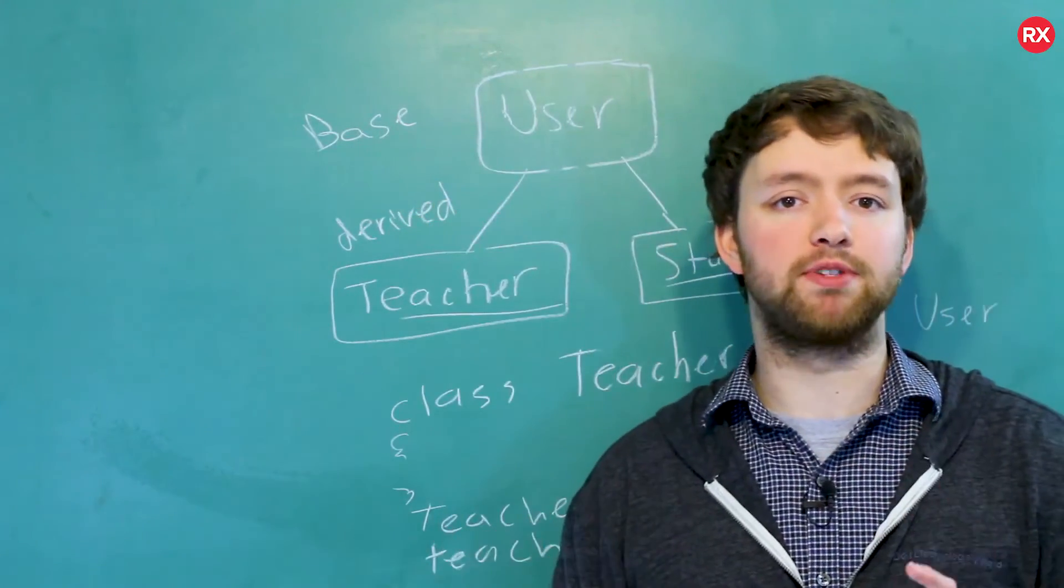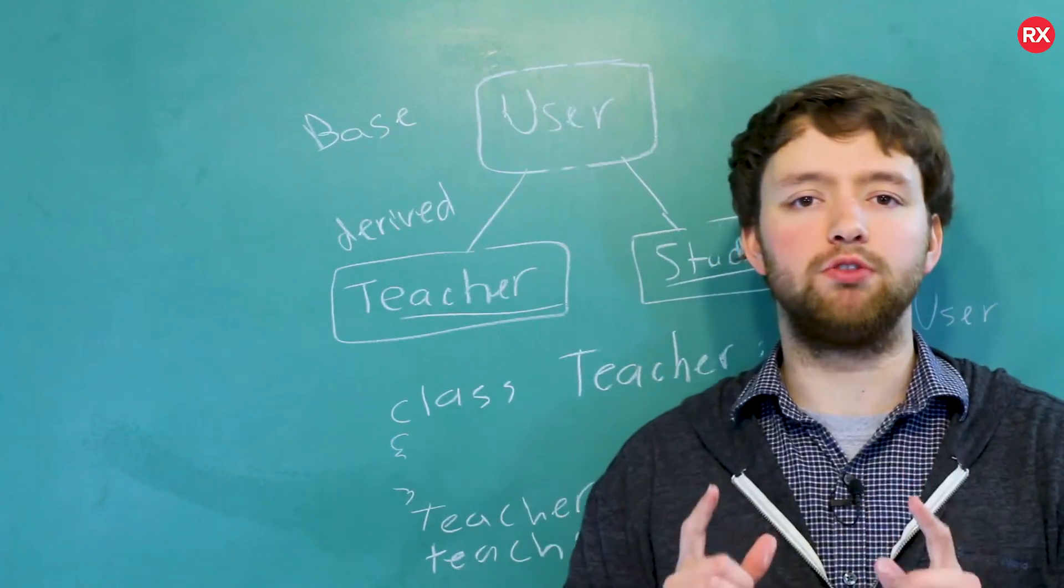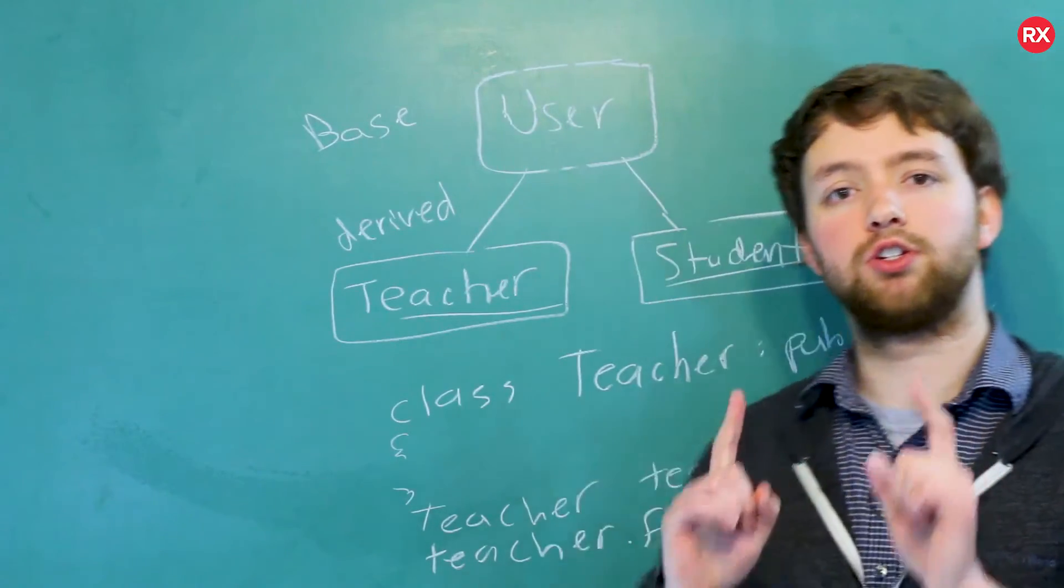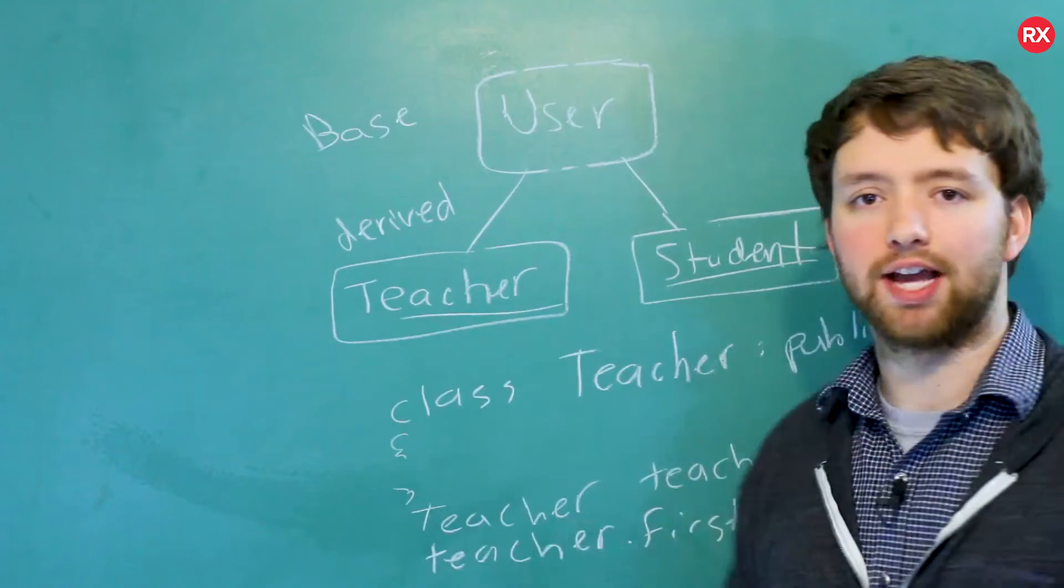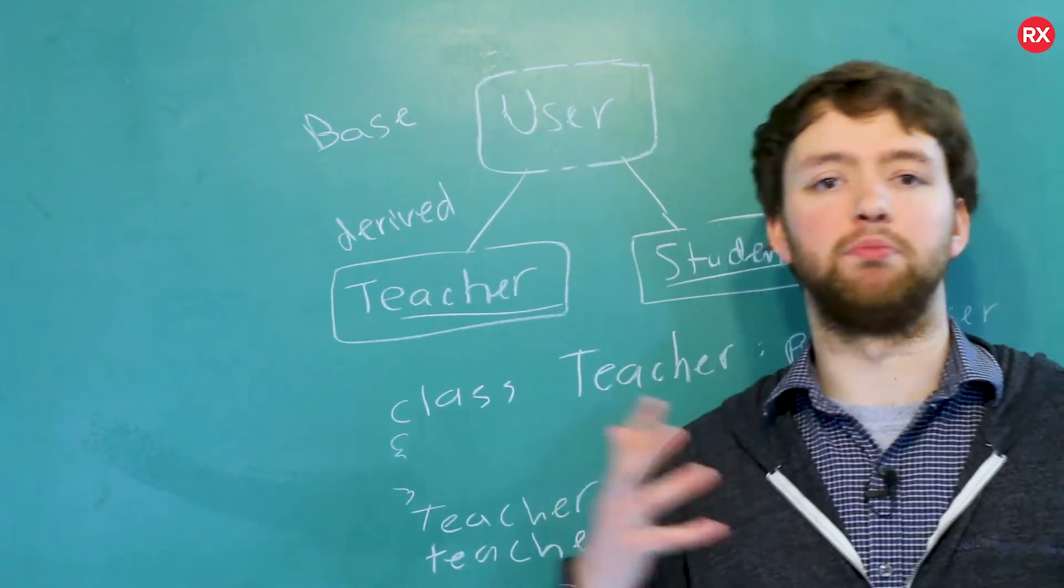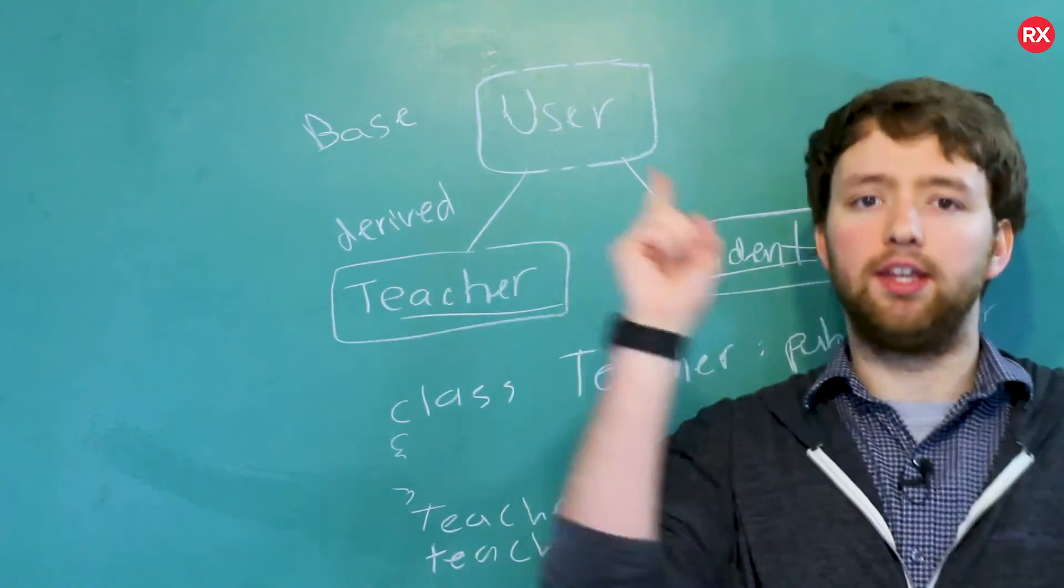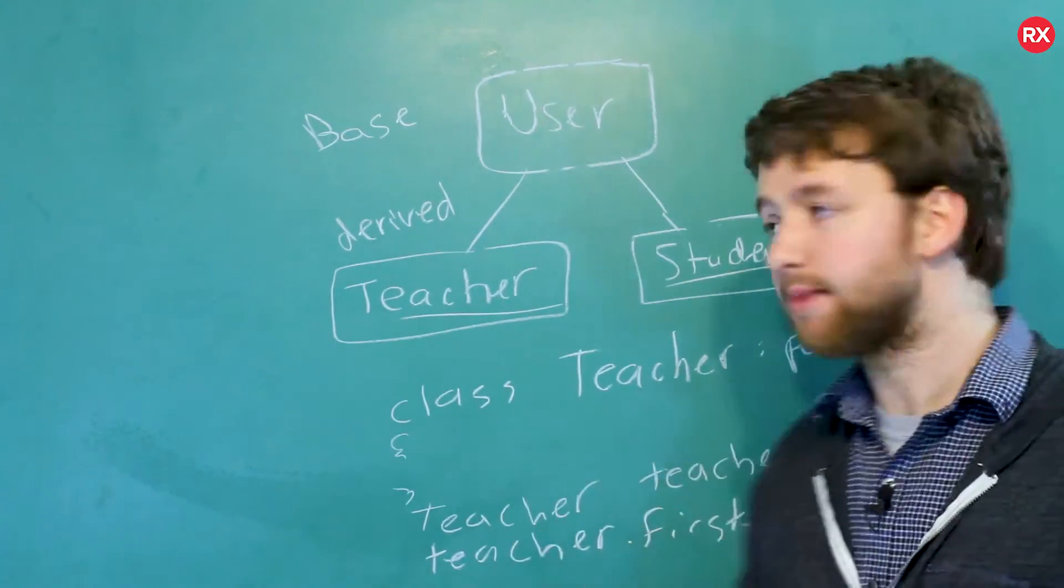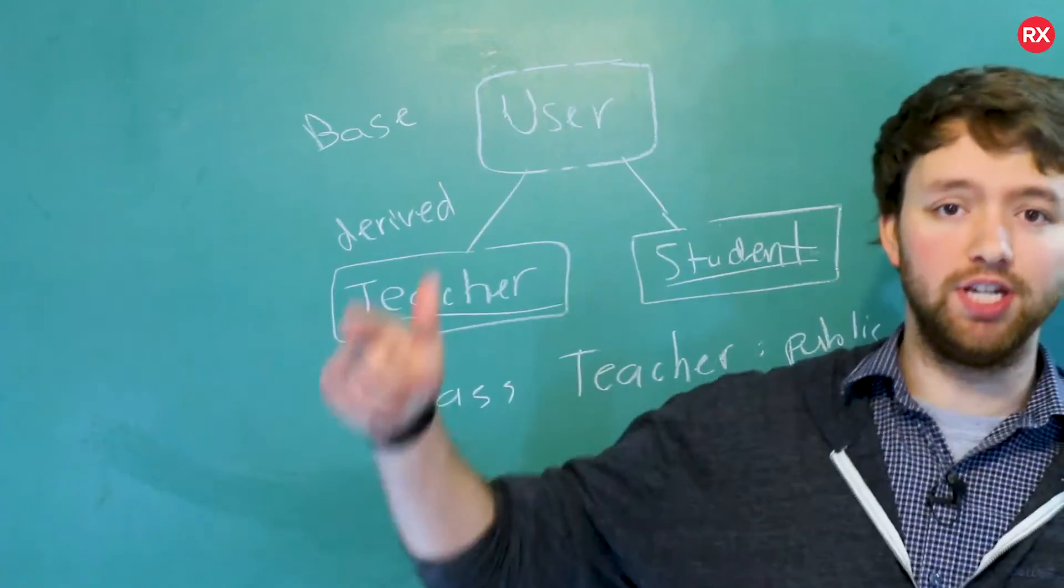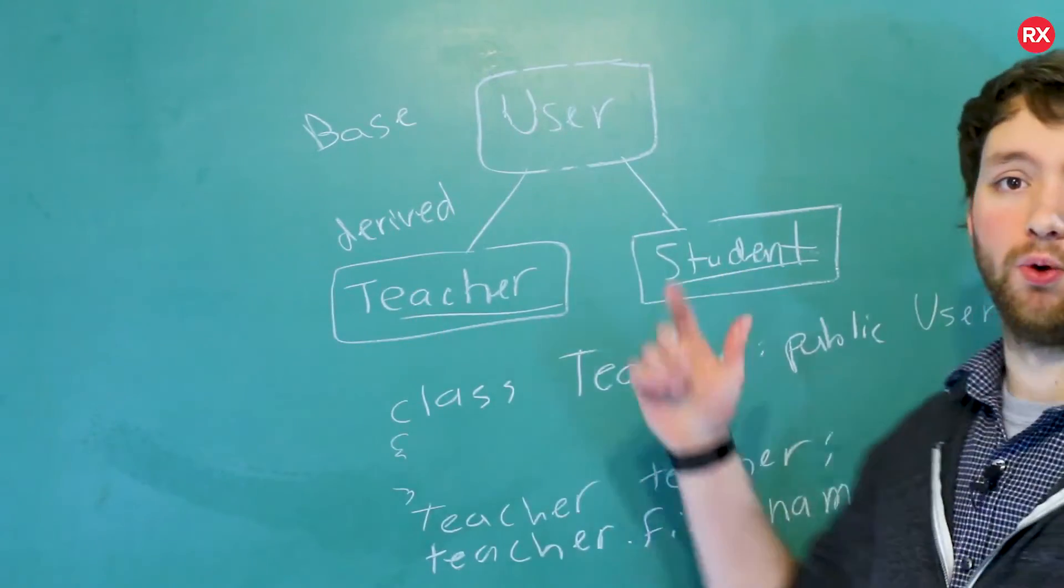That's because a teacher qualifies as a user and a student qualifies as a user as well. Now, this seems like such a simple observation, but it's really useful because we can actually talk to all the derived classes as if they are users and they will do the appropriate thing. So for example, we could say, users, get to work. And what's going to happen is the teachers are going to go teach stuff and the students are going to start studying.